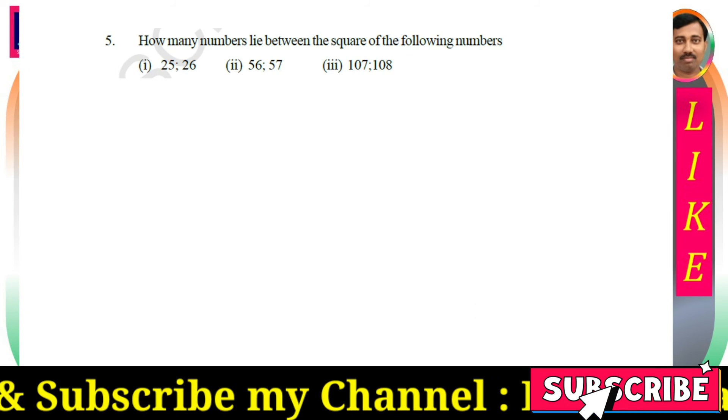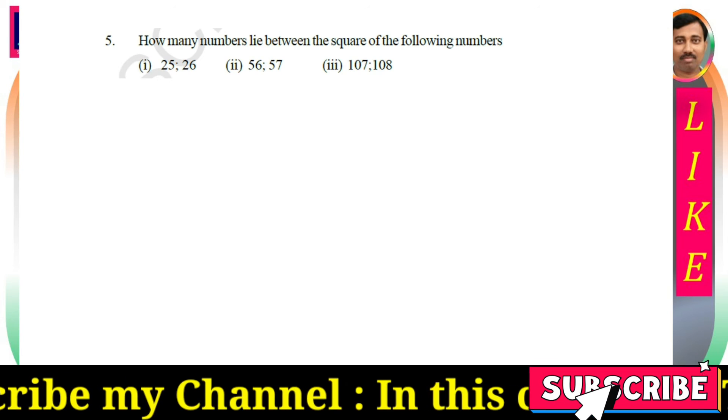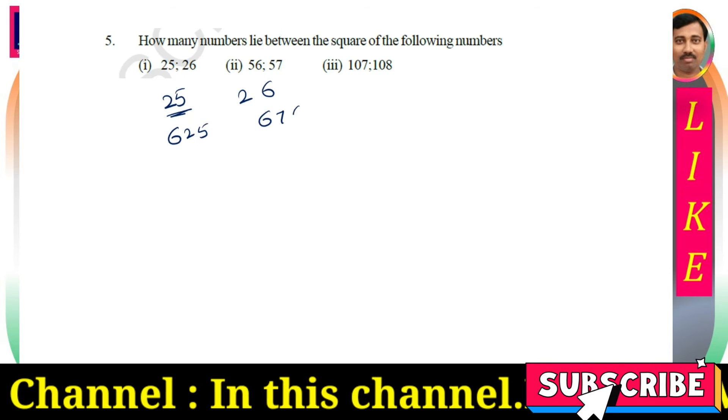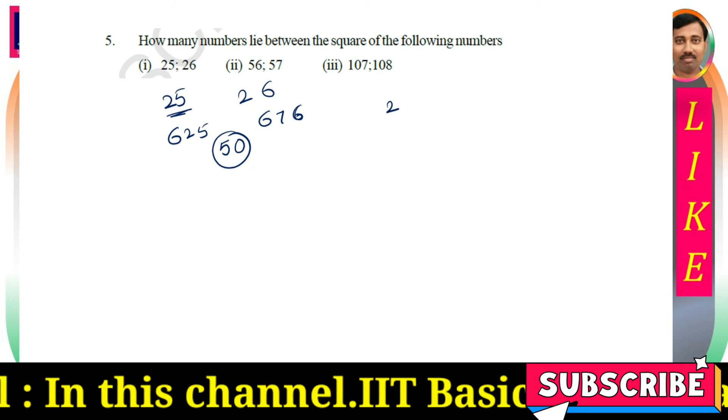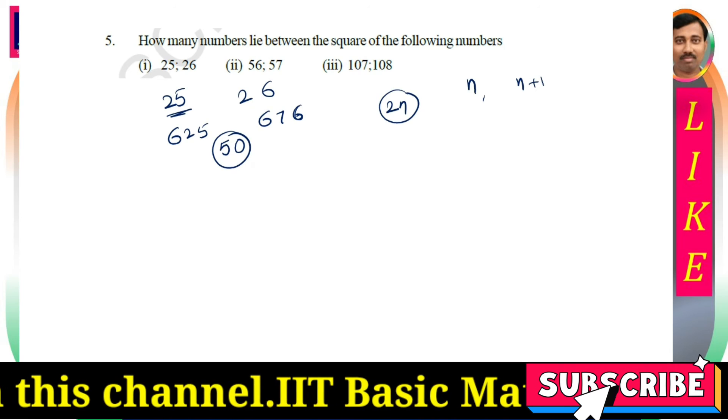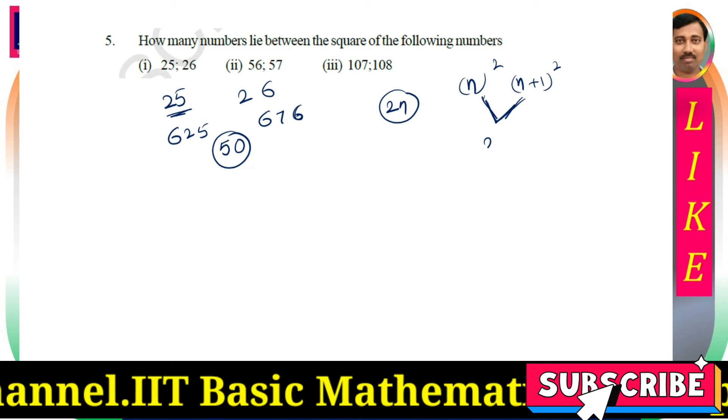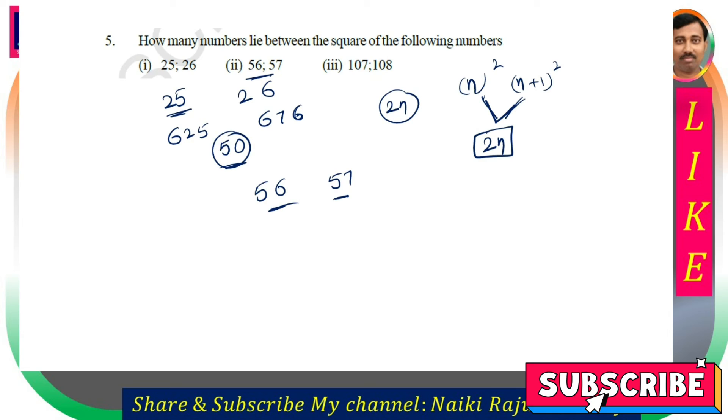How many numbers lie between the square of the following numbers? For 25 and 26: we know that 25 square is 625 and 26 square is 676. Between these, how many numbers? The formula is 2n, where n is the first number. Between n and n plus 1 squares, there are 2n non-perfect square numbers. So 2 times 25 equals 50. Next question, 56 and 57: between these consecutive numbers, there are 2 times 56 equals 112 non-perfect square numbers.